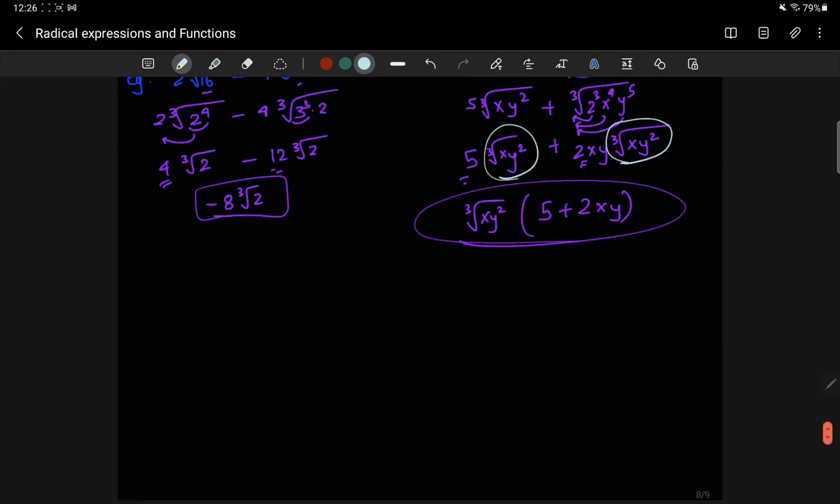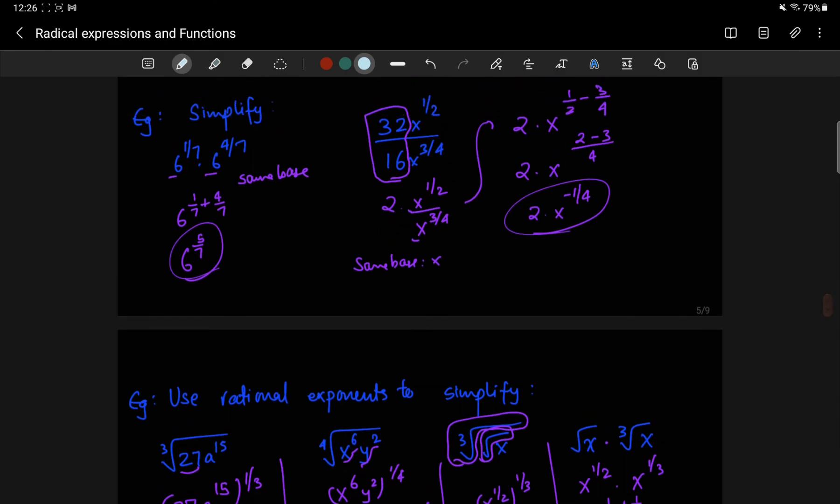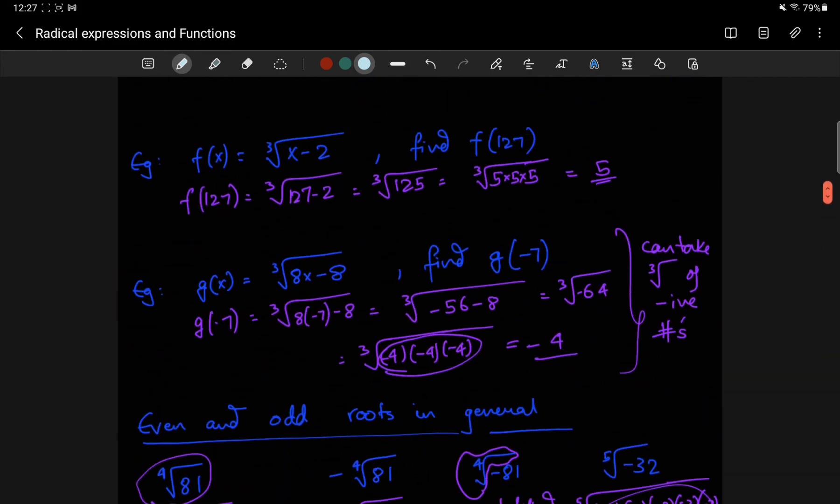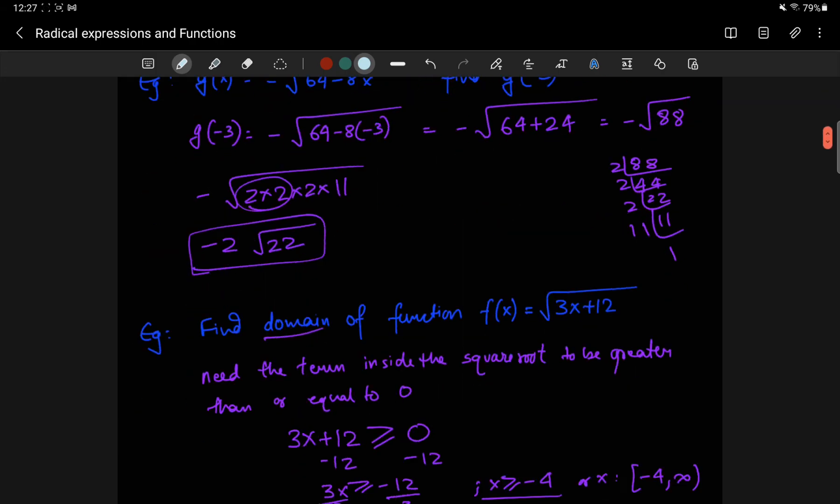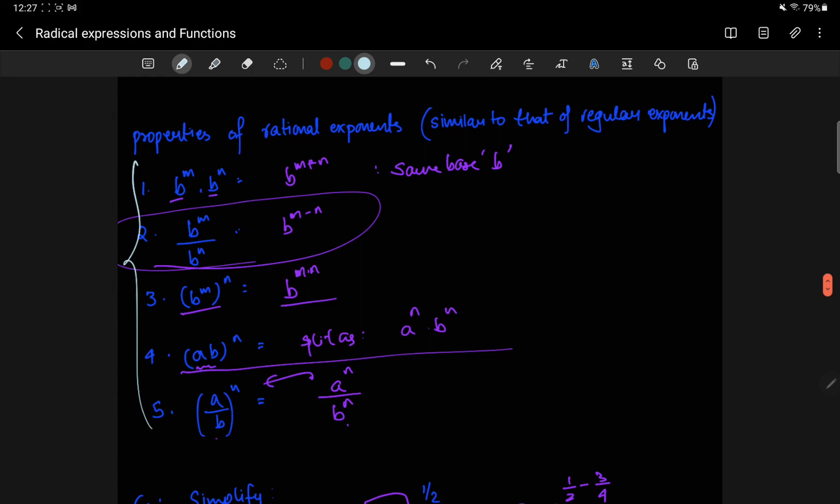So, basically, the most important thing is knowing, for example, that square root and power 1 half is the same, cube root and 1 third is the same, and these 5 properties. So, make sure that you use them properly. And that's pretty much it.